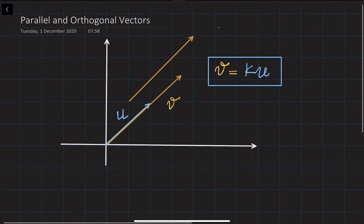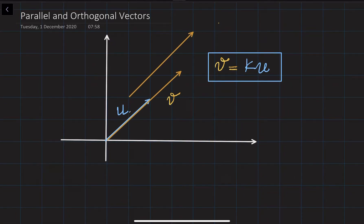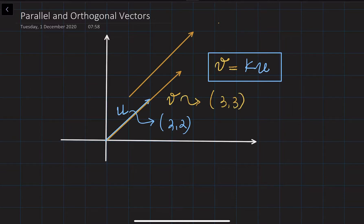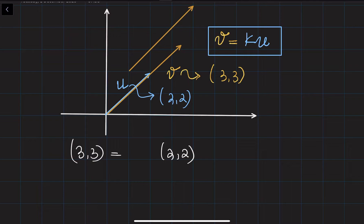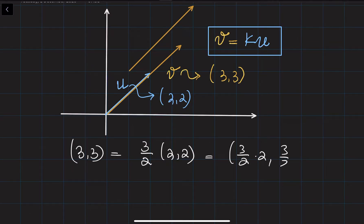Let's do an example. Vector u can be given with components 2 and 2, and vector v with components 3 and 3. These two vectors are parallel because 3 and 3 can be obtained by multiplying 2 and 2 by some constant — in this case, 3 over 2. Multiply 3/2 by both components: 3/2 times 2 gives 3, and 3/2 times 2 gives 3. So you get 3 and 3.